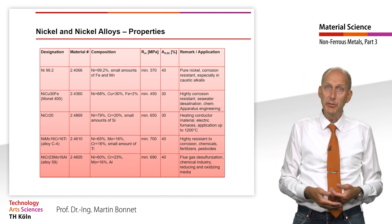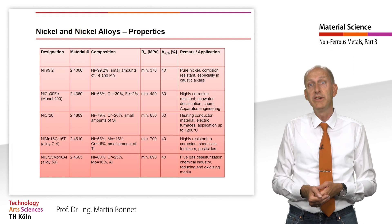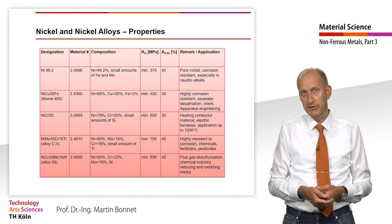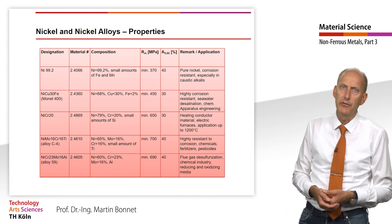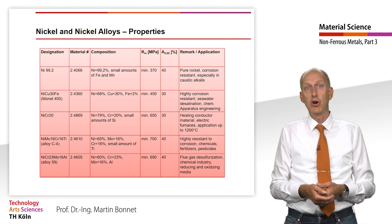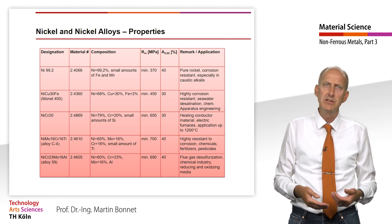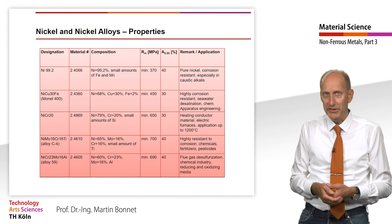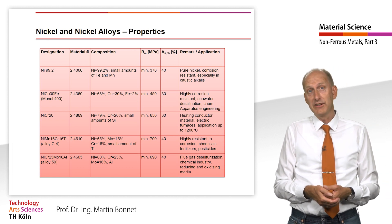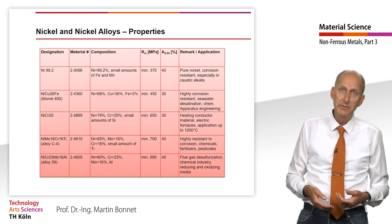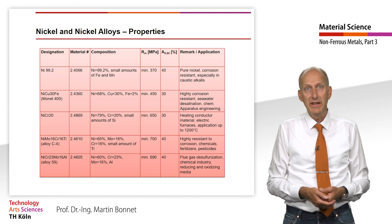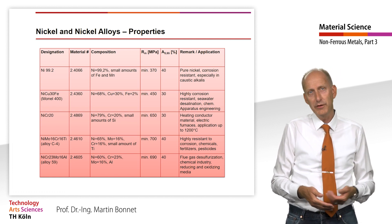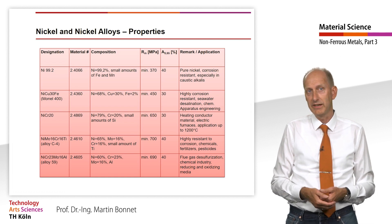The nickel-chromium alloys are characterized by increased scale and heat resistance, given both in reducing and oxidizing atmospheres. The extensive resistance of nickel-chromium alloys to oxidizing attack is based on the formation of firmly adhering dense passive layers. The classic representative here is NiCr20. Its scaling resistance extends to over 1200°C in air, but only to 350°C in sulfur- and halogen-containing atmospheres.